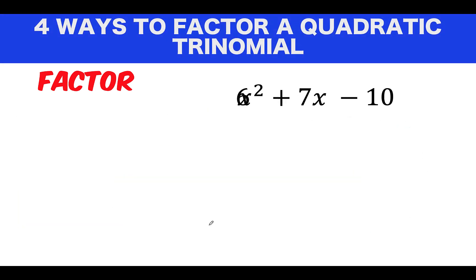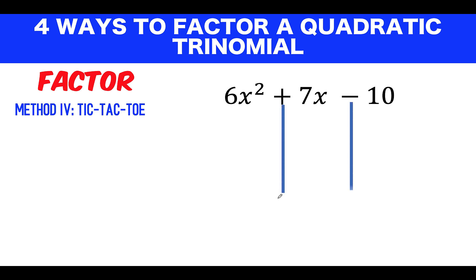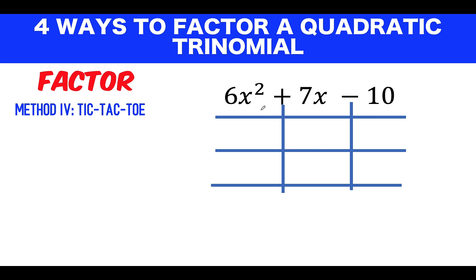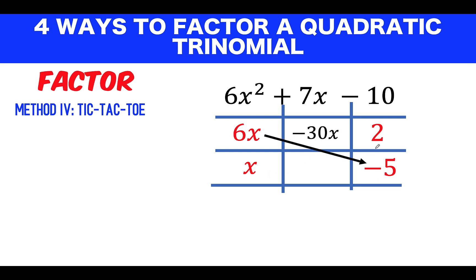Now let's proceed to method four: the tic-tac-toe method. Find possible factors of 6x²: 6 could be 1 × 6 or 2 × 3. This method involves trial and error. Let's begin with 6x and x. Factors of negative 10 could be 2 and negative 5, or 1 and negative 10, etc. Try 6x with negative 5, and x with 2: 6x × (−5) = −30x and x × 2 = 2x; adding gives −28x, which is wrong.